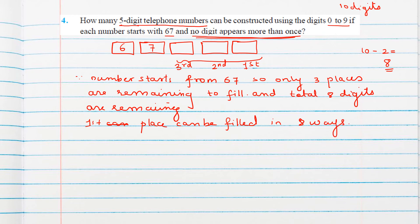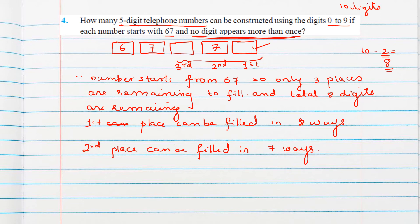For the 2nd remaining place, one more digit has been used, so from 8 we subtract 1, leaving 7 digits. The 2nd place can be filled in 7 ways. For the 3rd remaining place, 4 digits have been used in total out of 10, so it can be filled in 6 ways.